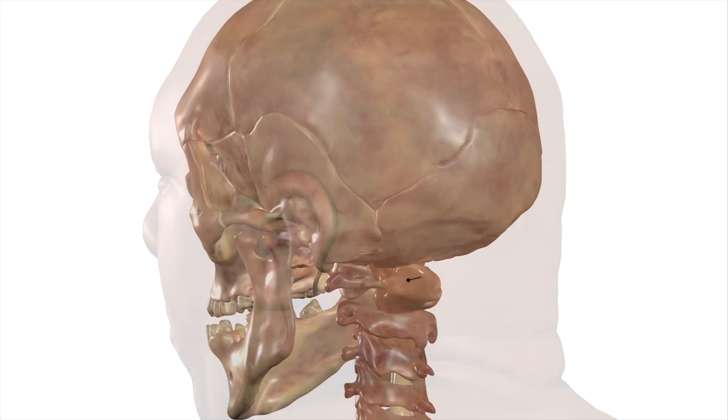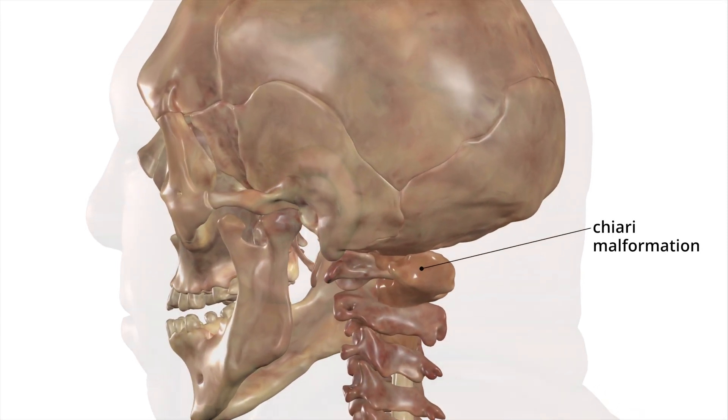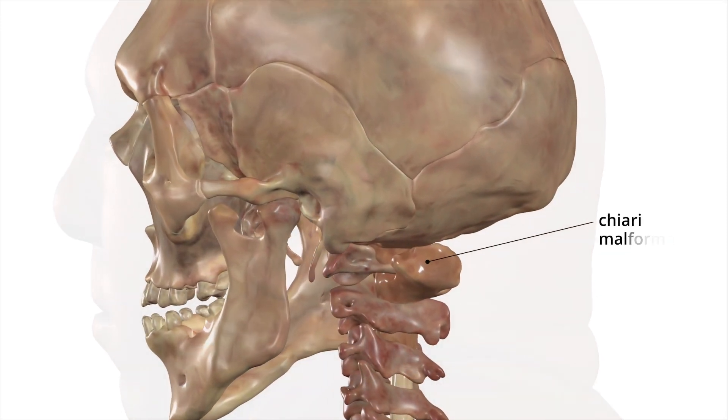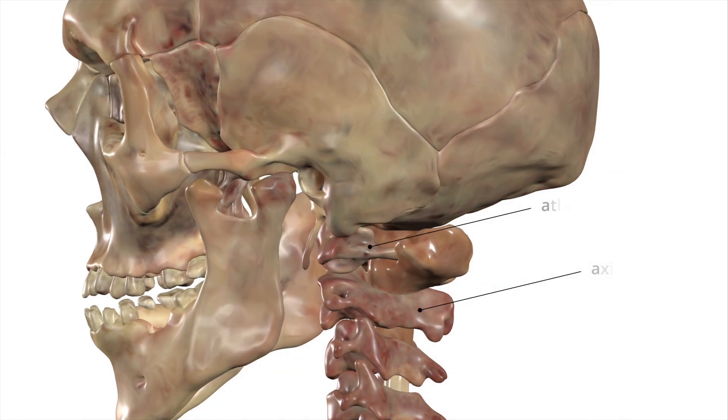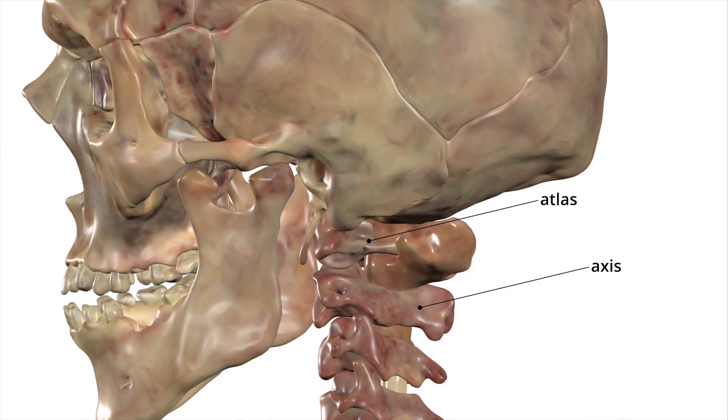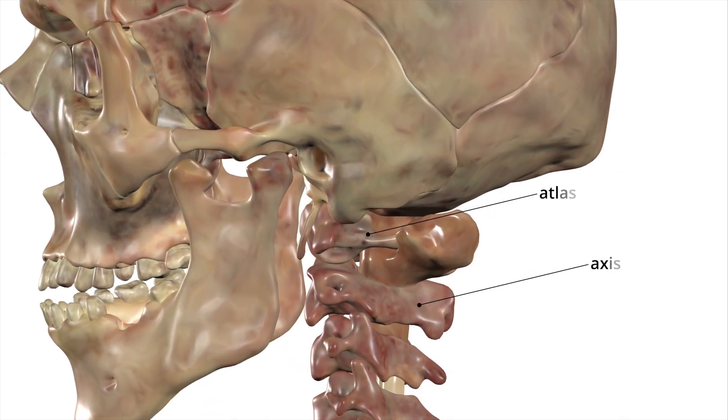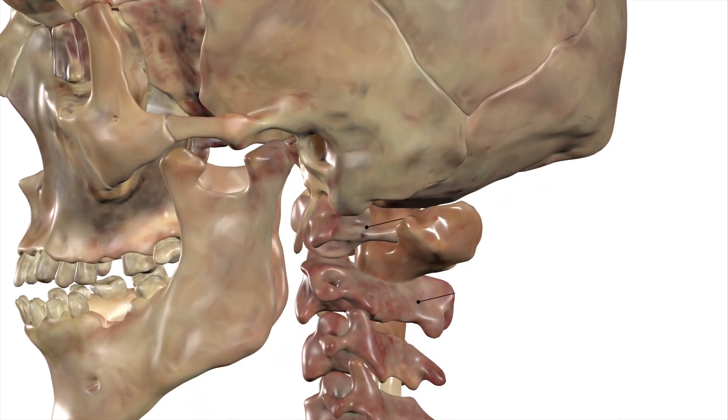In this individual, the cerebellum also extends out between the atlas and axis, the first two vertebrae where the skull attaches to the spine.